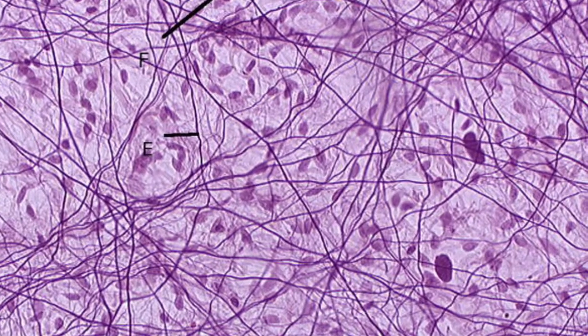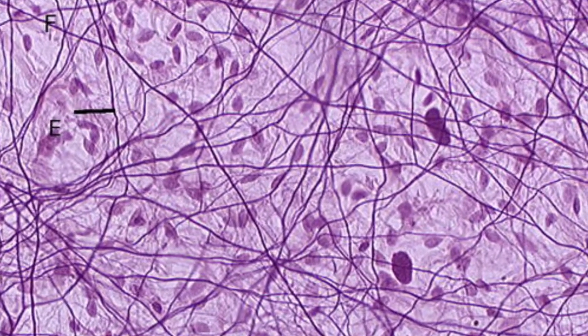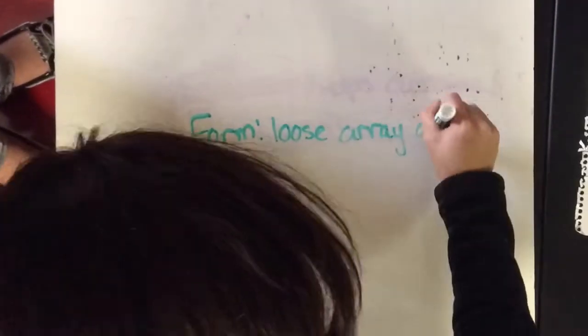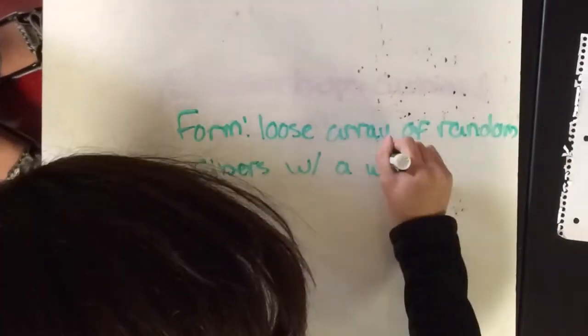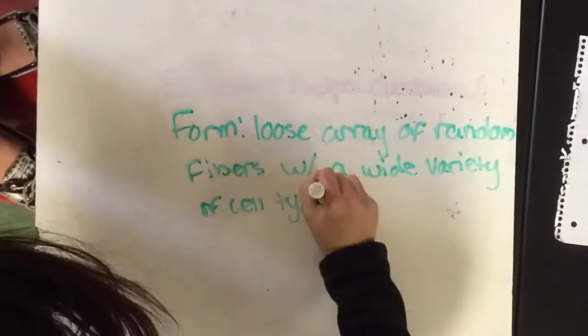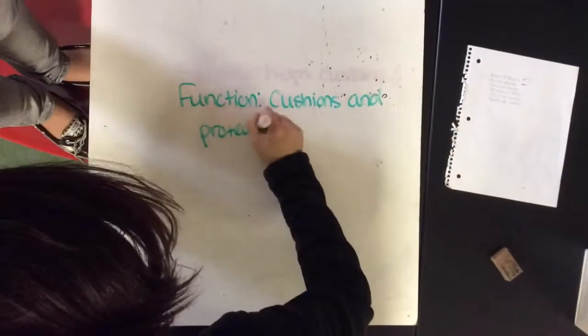Areolar connective. It has a loose array of random fibers and varied cell types. It is meant to cushion and protect the kidney from infections.